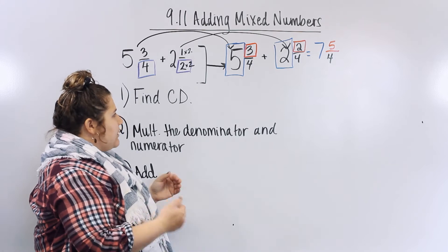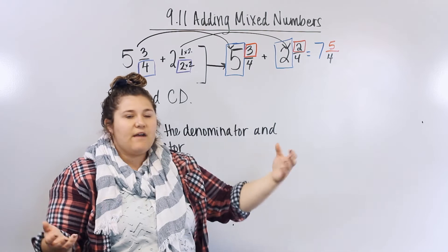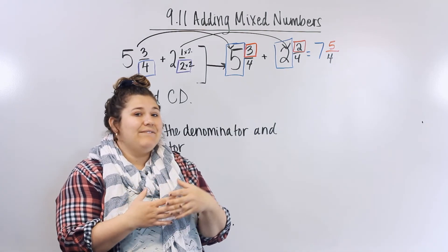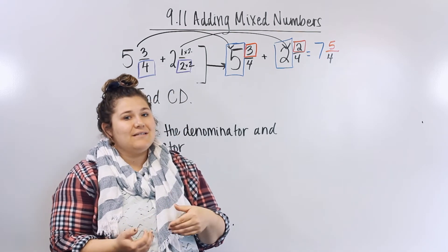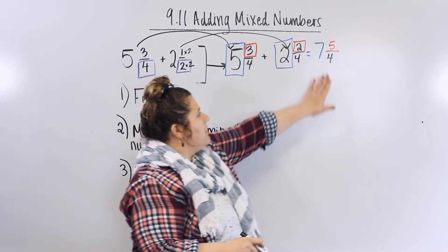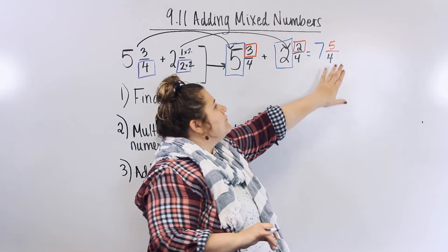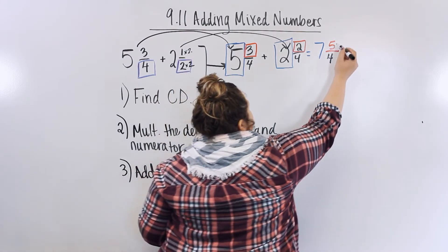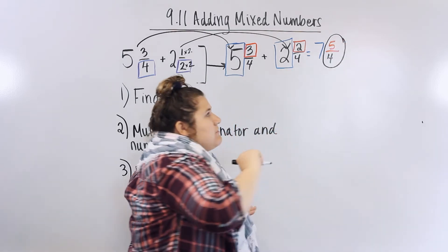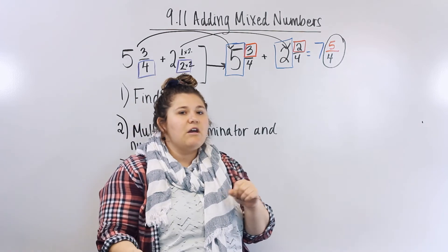Now, if you look at our answer, we got 7 and 5 fourths. 5 fourths is an improper fraction. So we have to change that to a mixed number. So we're going to leave the 7 alone for right now. They're just going to chill up there. But we're going to practice. We're going to work on this.